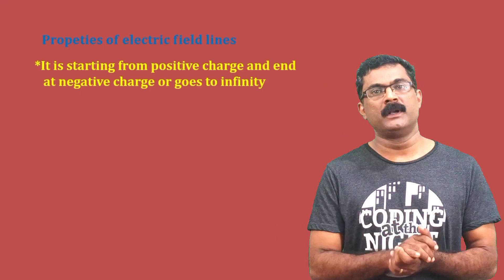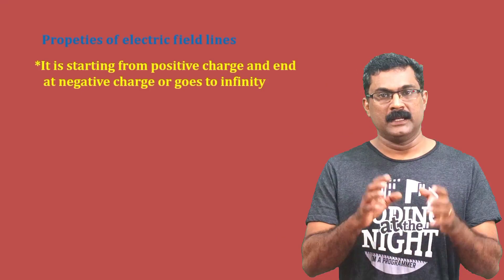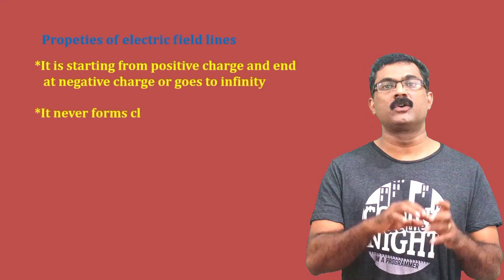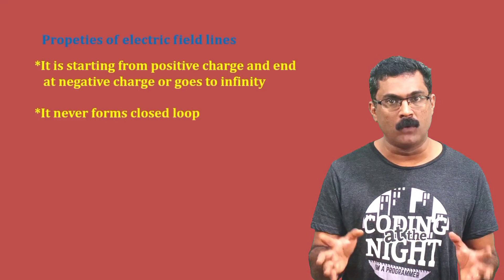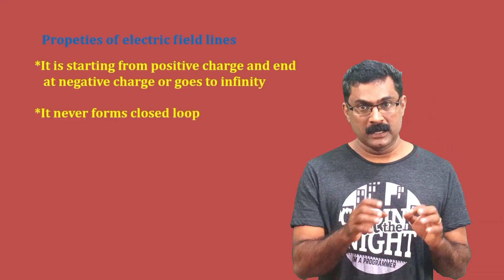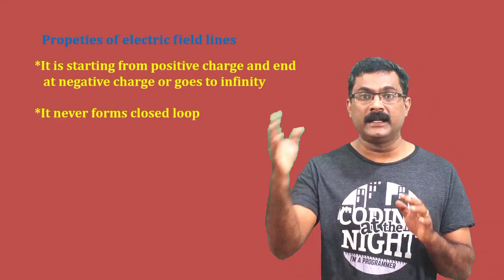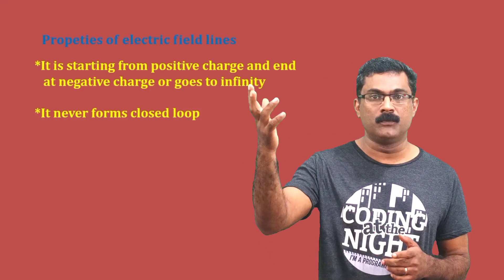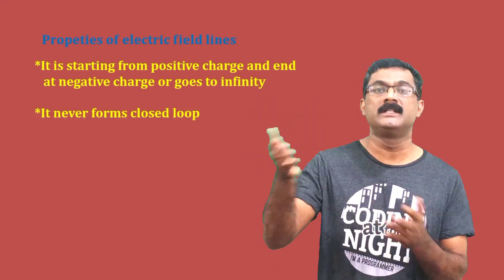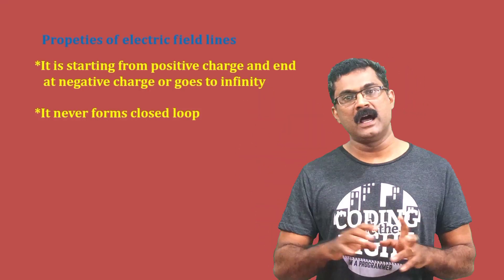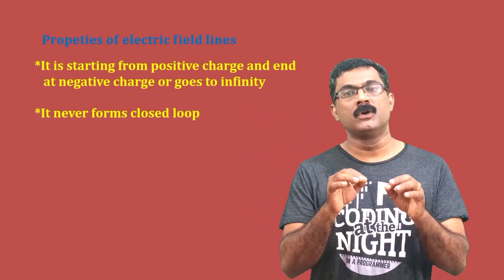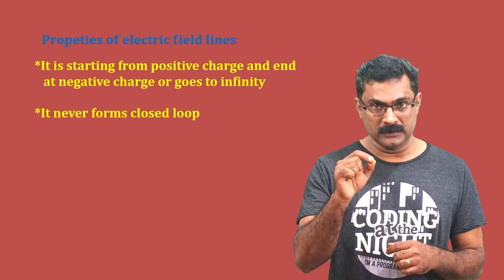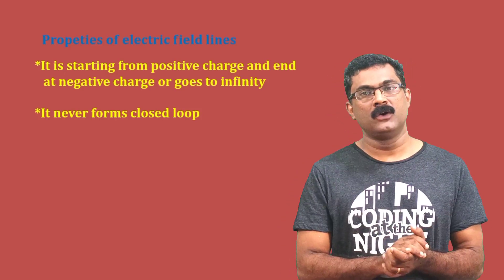The second property is: electric field lines never form a closed loop. Because the lines go from the positive charge to the negative charge or to infinity, they will not form a closed loop. This is a very important point — if you get a true or false question, remember field lines never form a closed loop.